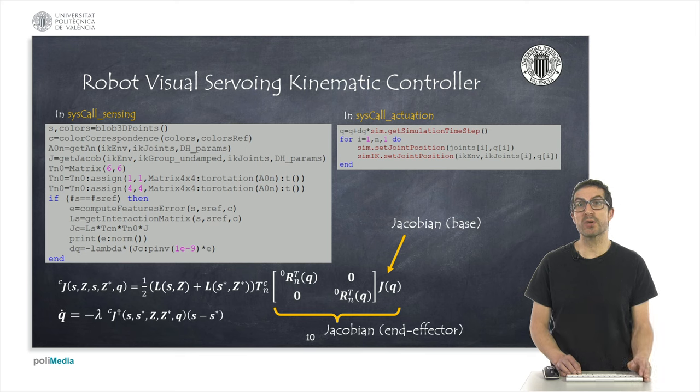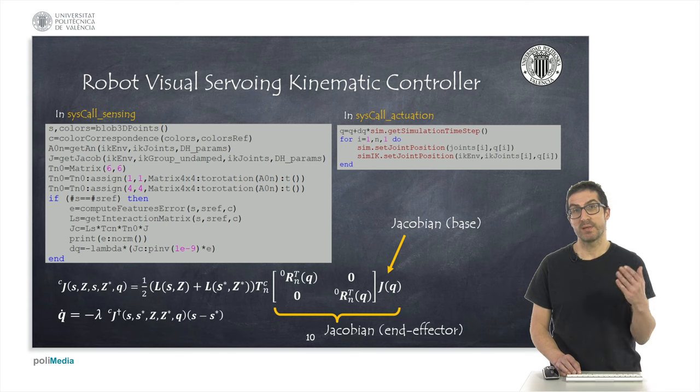A proportional control based on the pseudo-inverse of the jacobian matrix will allow us to obtain joint speeds that would make the error converge to zero. Due to non-linearities, this is not always true, but as we will see in the examples, the control is quite robust,